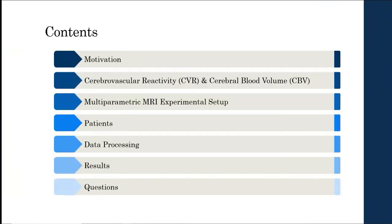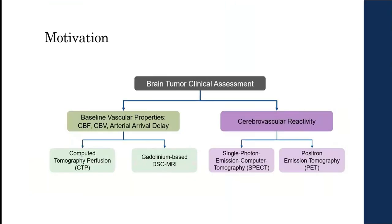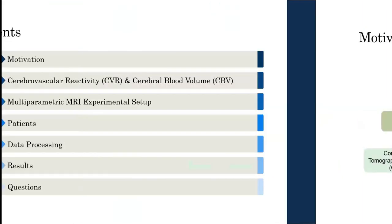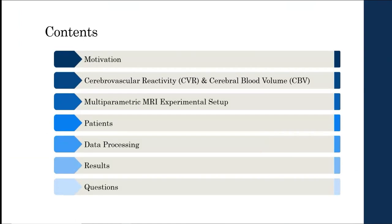First, a little bit about what I'll talk about in this presentation. We'll discuss the motivation behind our study, then the biological mechanisms that allow us to use CO2 and O2 inhalation to measure CVR and CBV respectively, and how these measures are useful for glioma diagnosis. Then we'll cover the multi-parametric MRI experimental setup, data processing steps, our cohort, and finally the results.